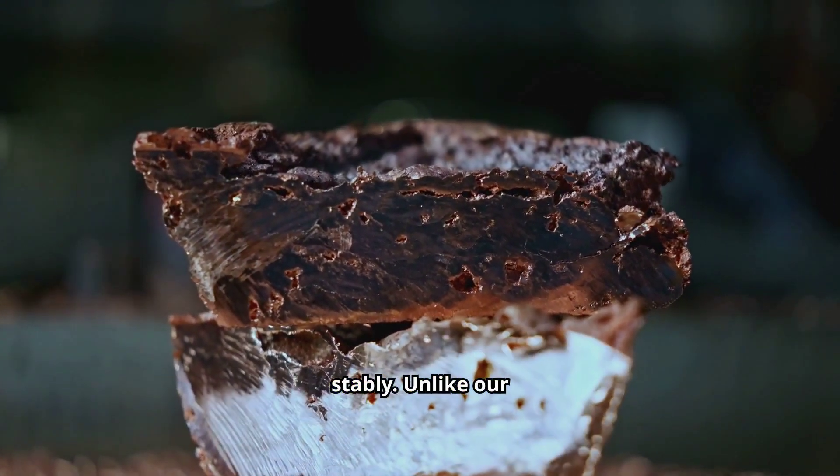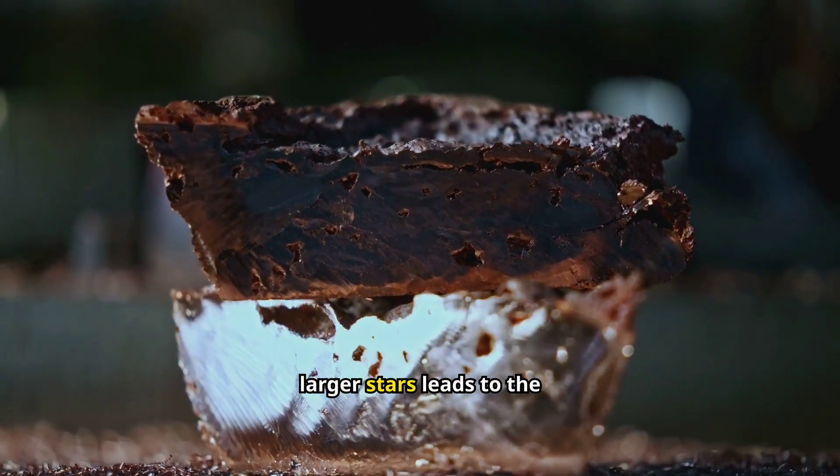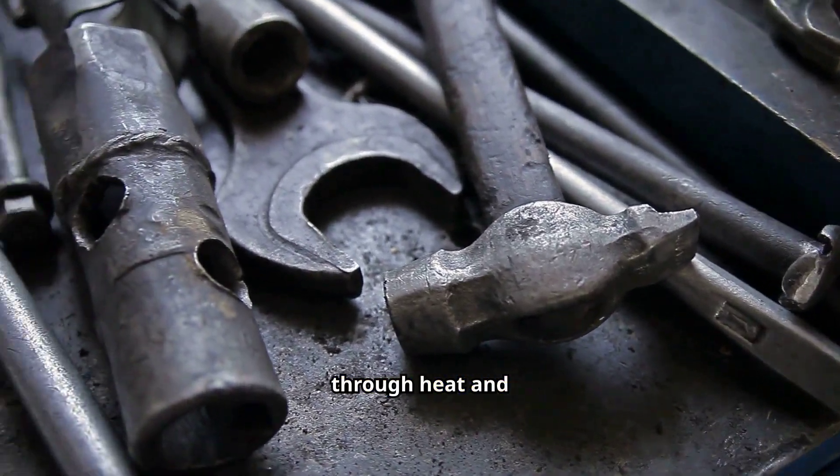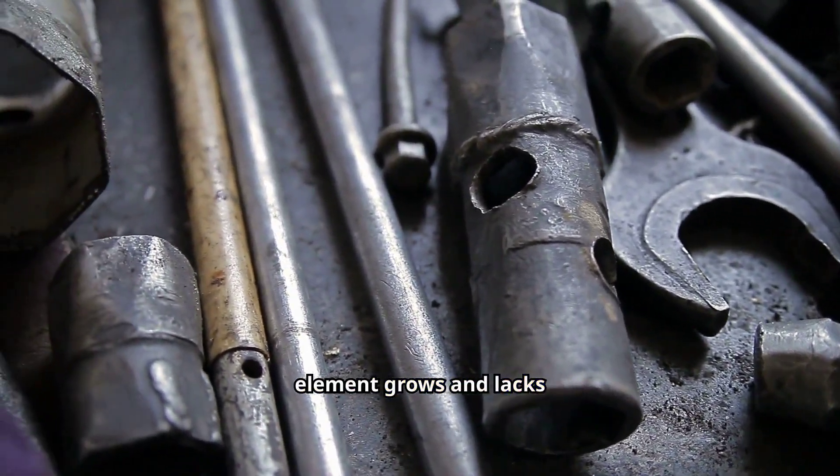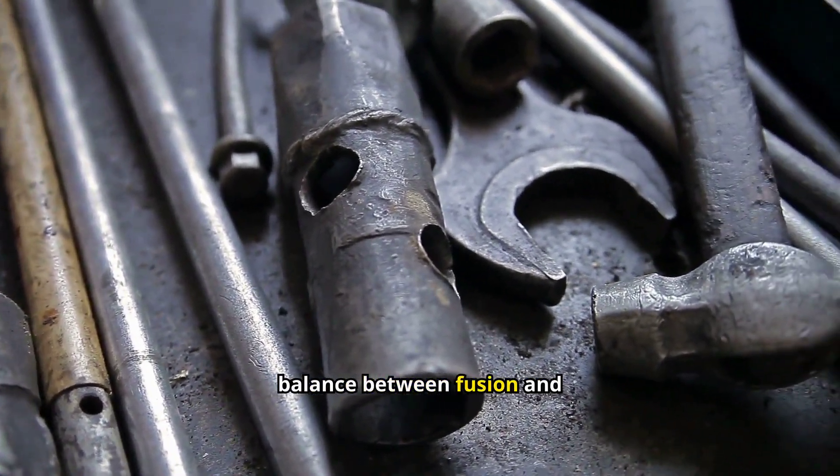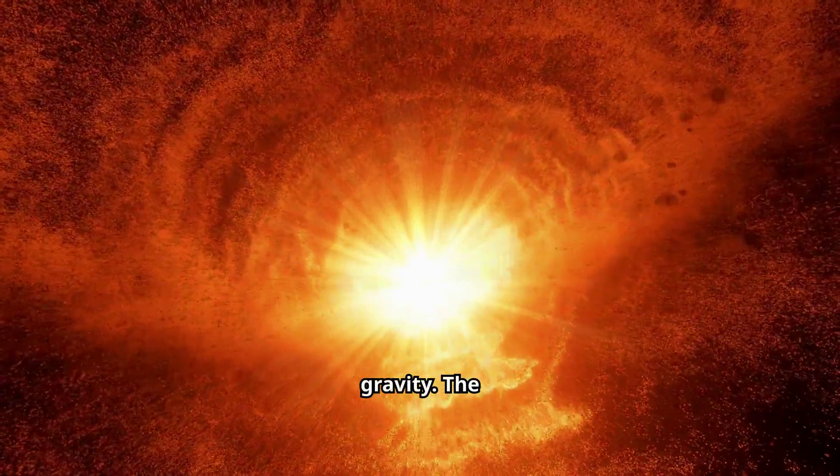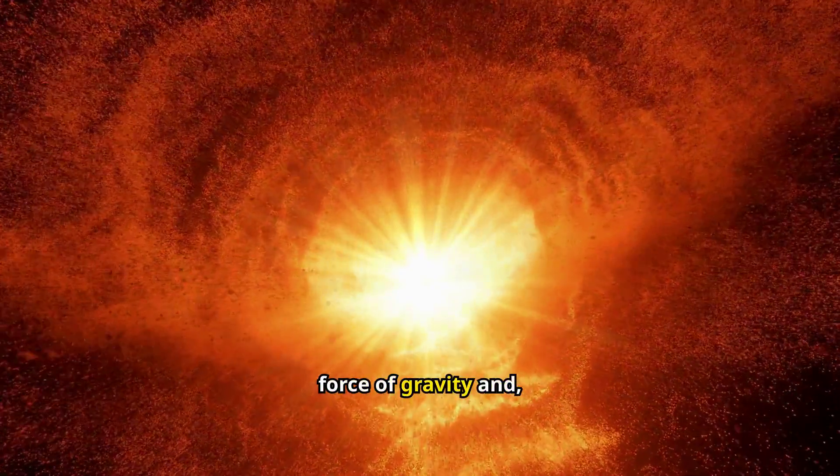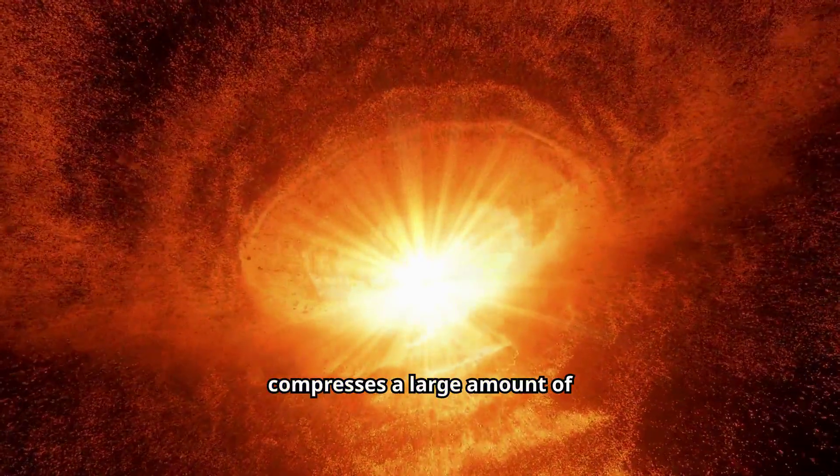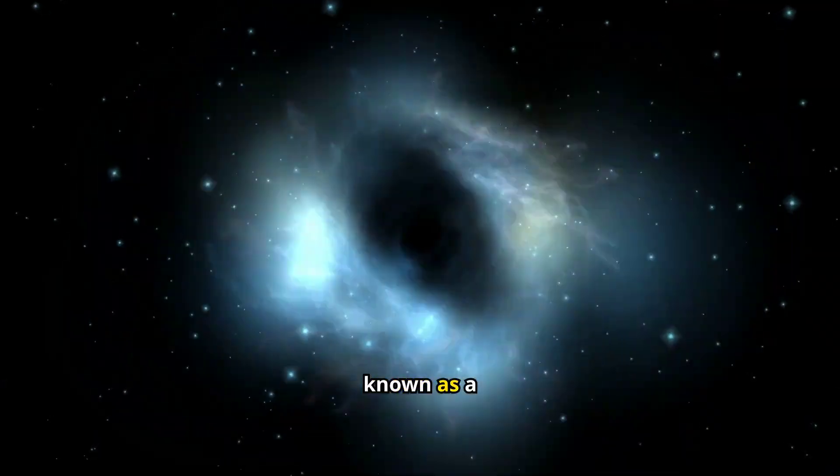Unlike our sun, fusion in the cores of much larger stars leads to the formation of heavy elements through heat and pressure. As the iron element grows and lacks any counteracting force, the star begins to lose its balance between fusion and gravity. The core collapses under the force of gravity and, within a very short time, compresses a large amount of mass, causing an explosion known as a supernova.